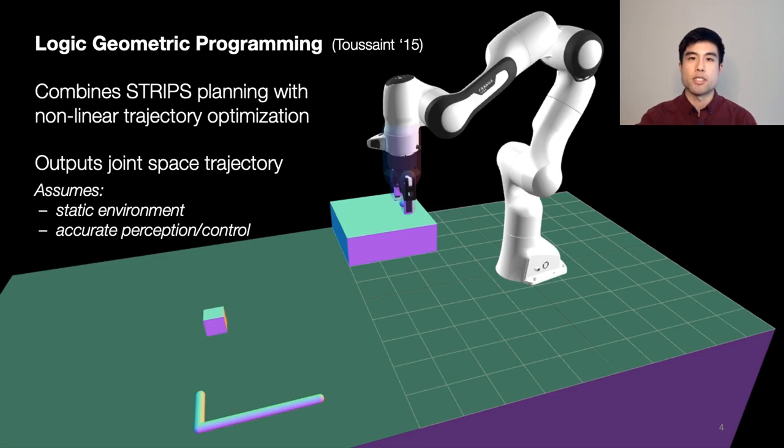If something in the environment changes, such as the position of the small box, then the joint configuration for grasping the small box is no longer valid. In these cases, the robot would have to stop and replan, which can take anywhere from several seconds to several minutes. This makes task and motion planning generally impractical to use in the real world.